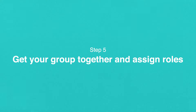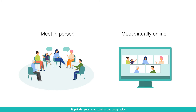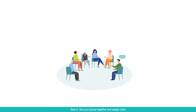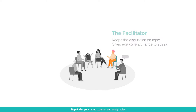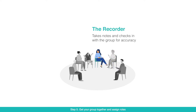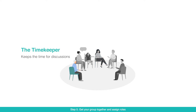Step 5: Get your group together and assign roles. Feel free to meet in person or virtually, whichever is more comfortable. Once you've gathered everyone, assign the following roles: the community circle facilitator, who ensures that the discussion stays on topic and makes sure that every person is getting a chance to speak; the recorder, who takes notes on what is said and checks in with the group to make sure their comments are being recorded accurately; and the timekeeper, who makes sure that discussions stay on time.